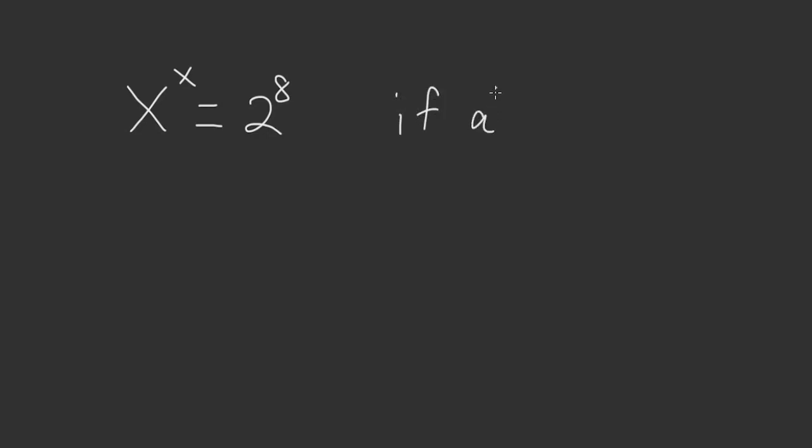If a to the a is equal to b to the b, then a is equal to b. We have x to the x. We need to get a number to itself.